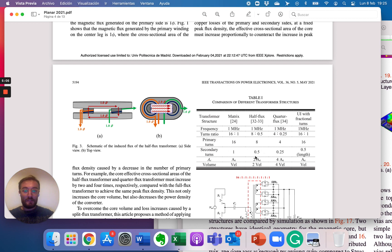And here is the difference between the comparison with the matrix transformer of Professor Lee that they have 16 turns in primary and one in secondary. In this case, they used 16 turns in primary and 0.5 turns in secondary.